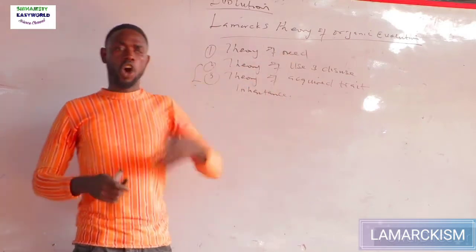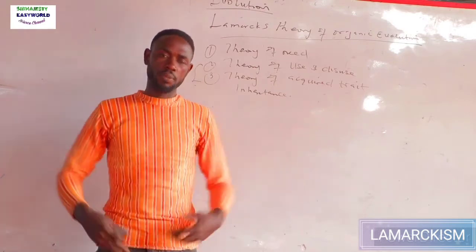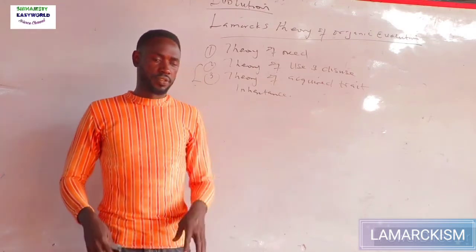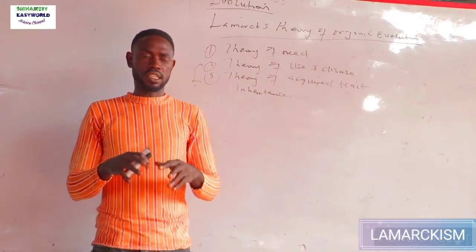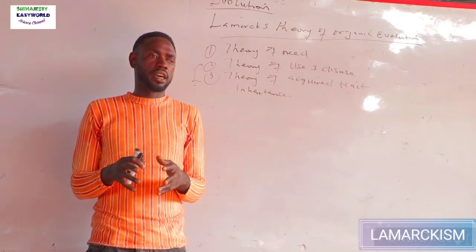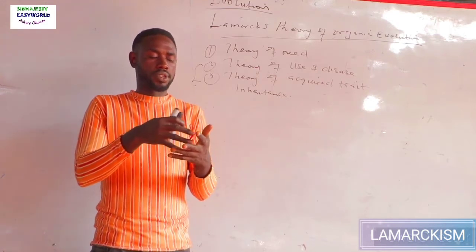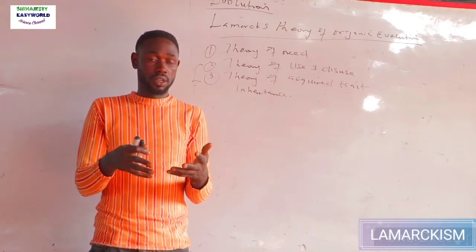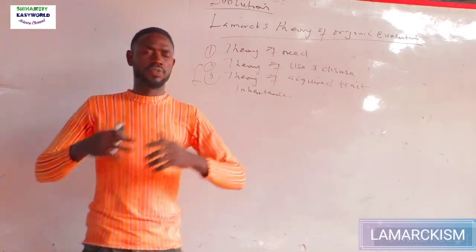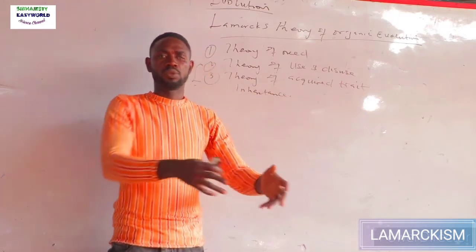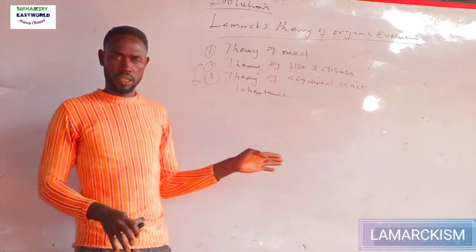The theory of need states that organisms do not just develop structures — they develop them because the environment in which they live presses them to do so. For example, a frog or toad initially didn't have webs between their digits, but as they continuously visited water, there arose a need for webs to enable them to swim. That is the theory of need.